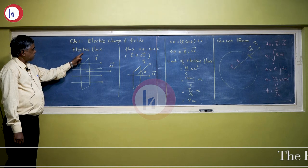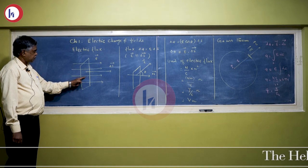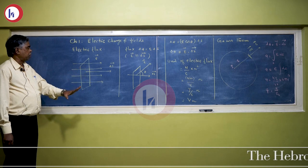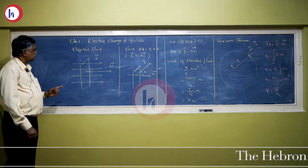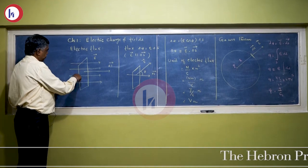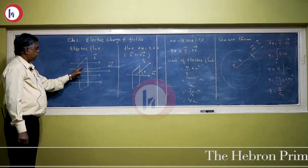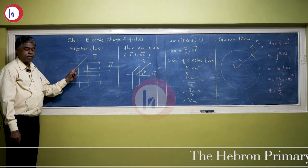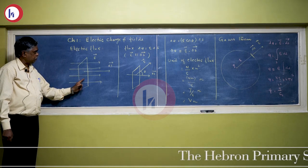Electric flux means the number of electric field lines passing through a given area perpendicularly. For example, one element is given and delta S is the area of this element kept in the uniform electric field. Electric field lines passing through the given surface perpendicularly.